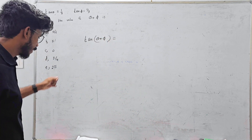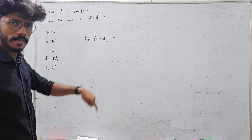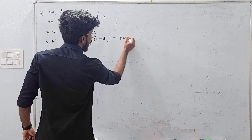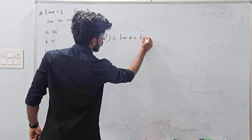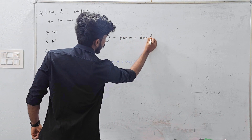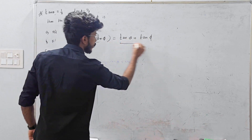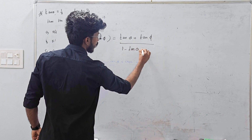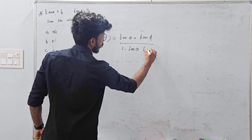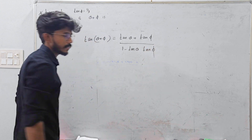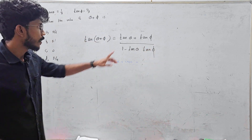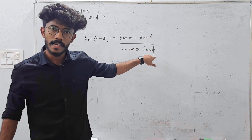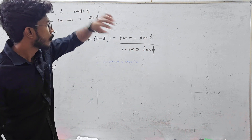What is the math formula? Tan(x + y) equals tan x plus tan y divided by 1 minus tan x times tan y. This is the tan addition formula. You have the value of tan theta and tan phi — it depends on your math formula.